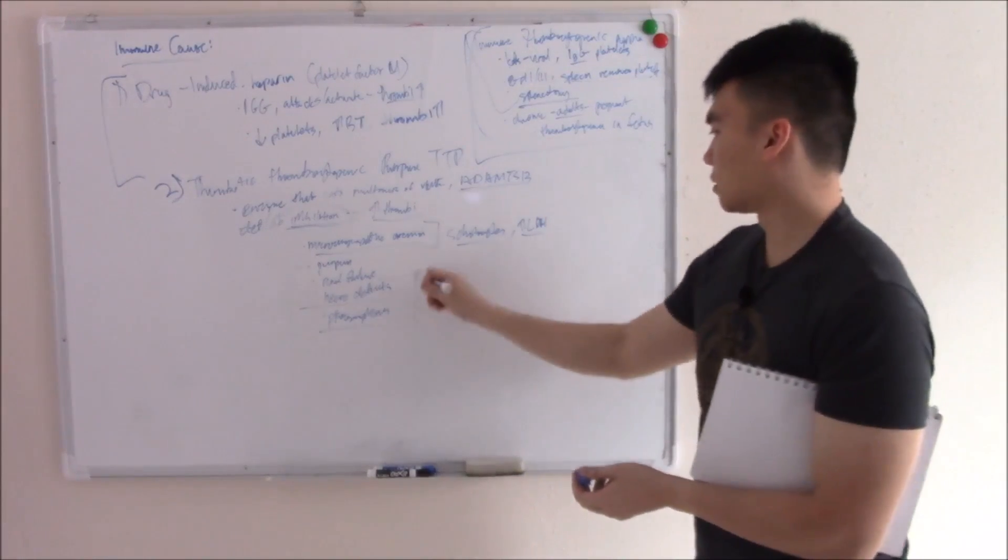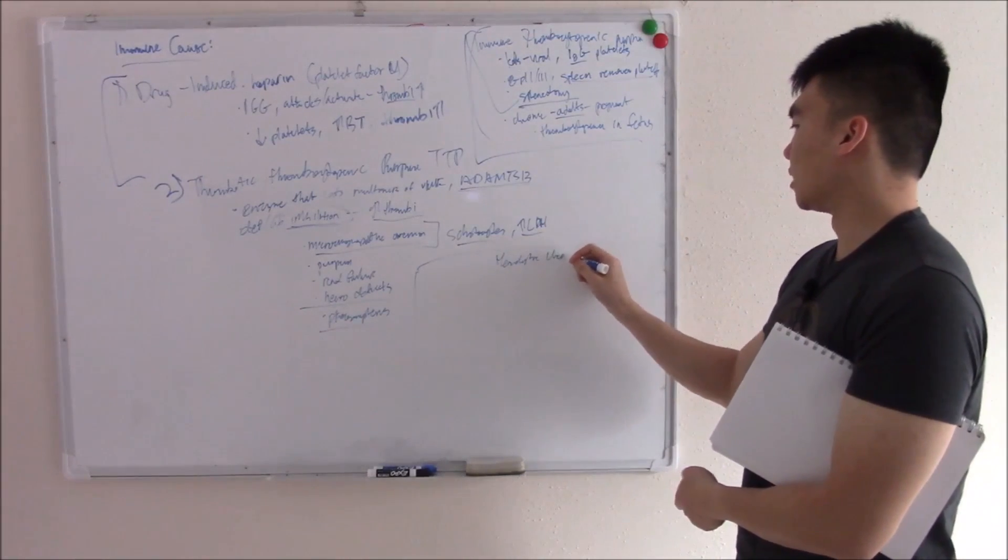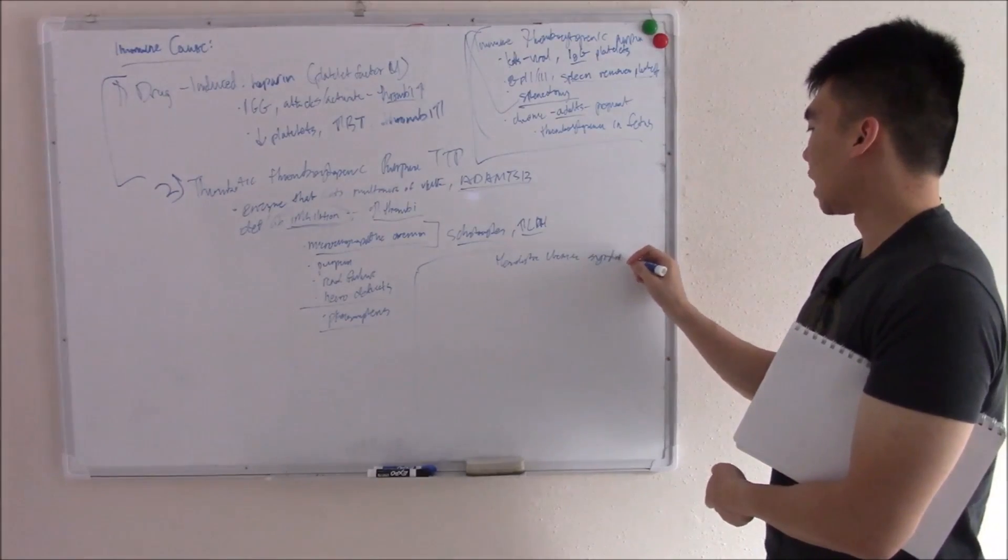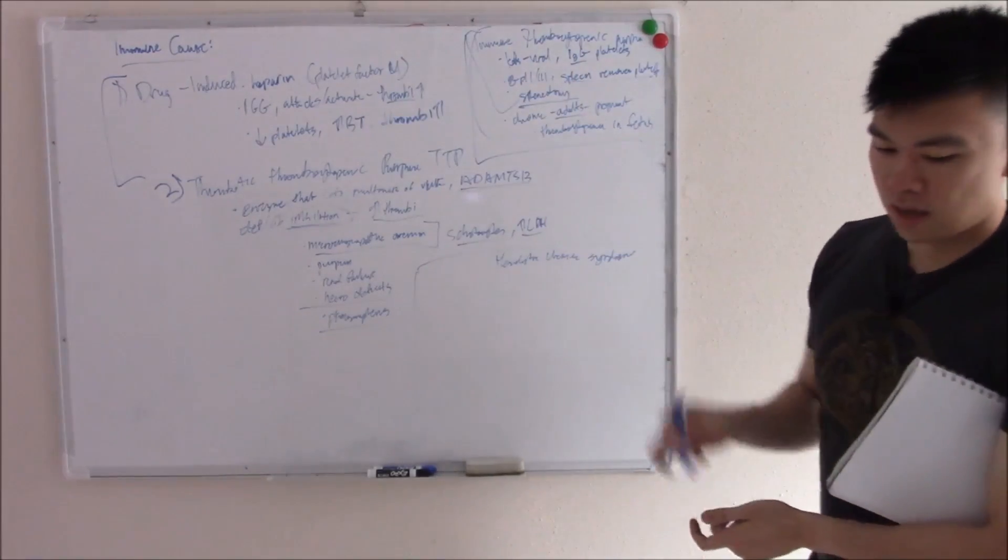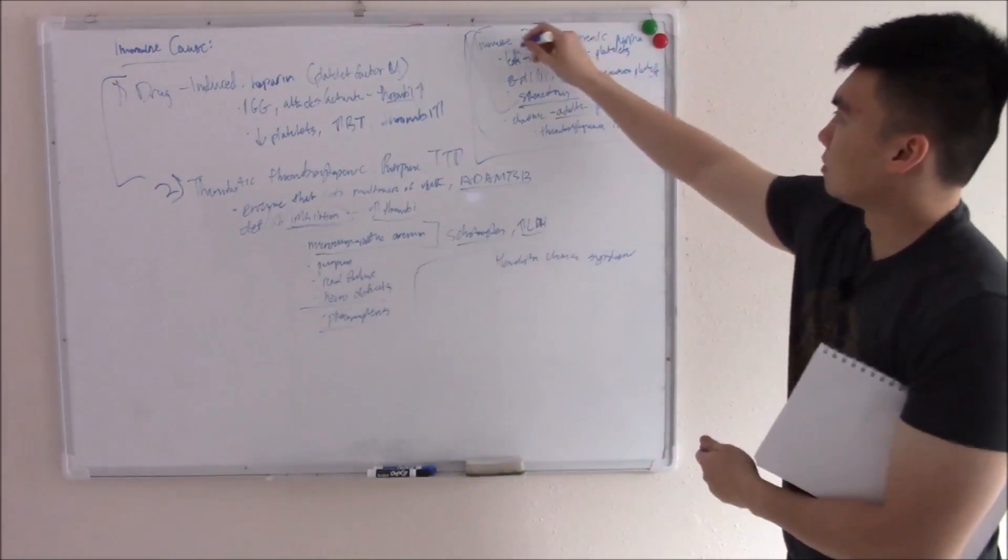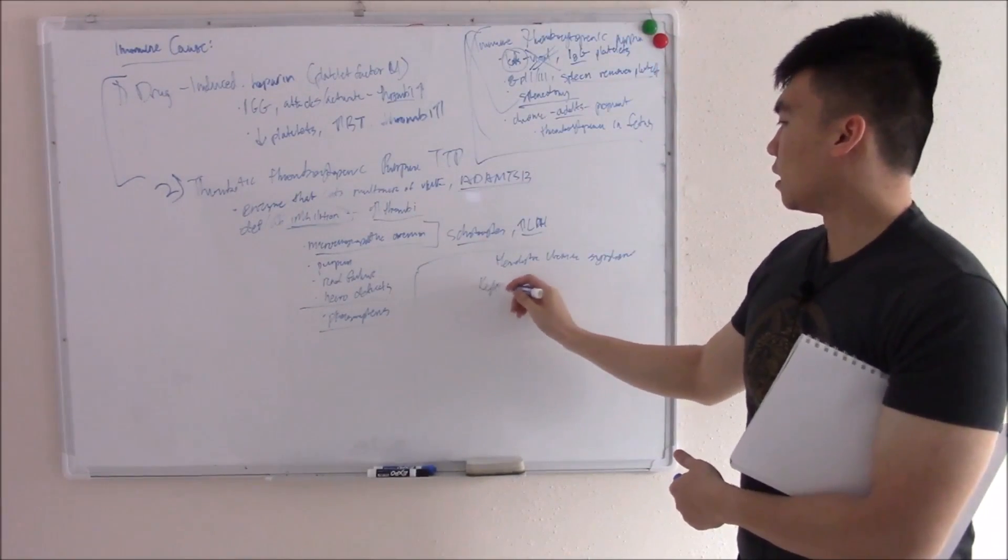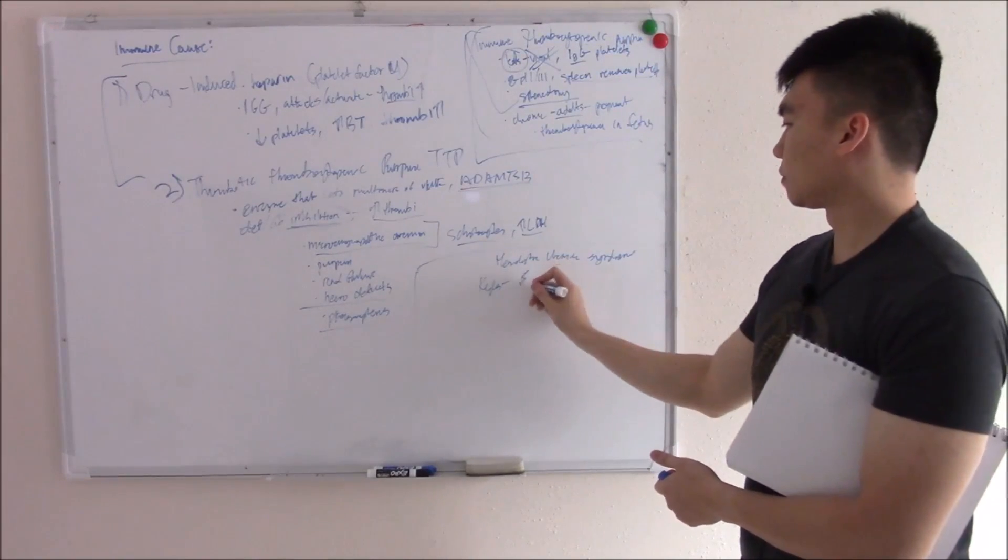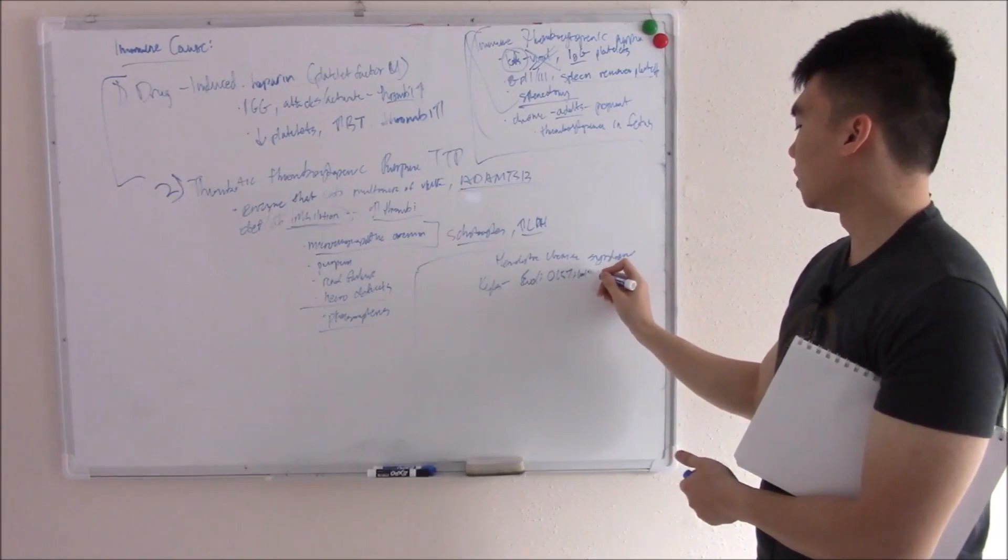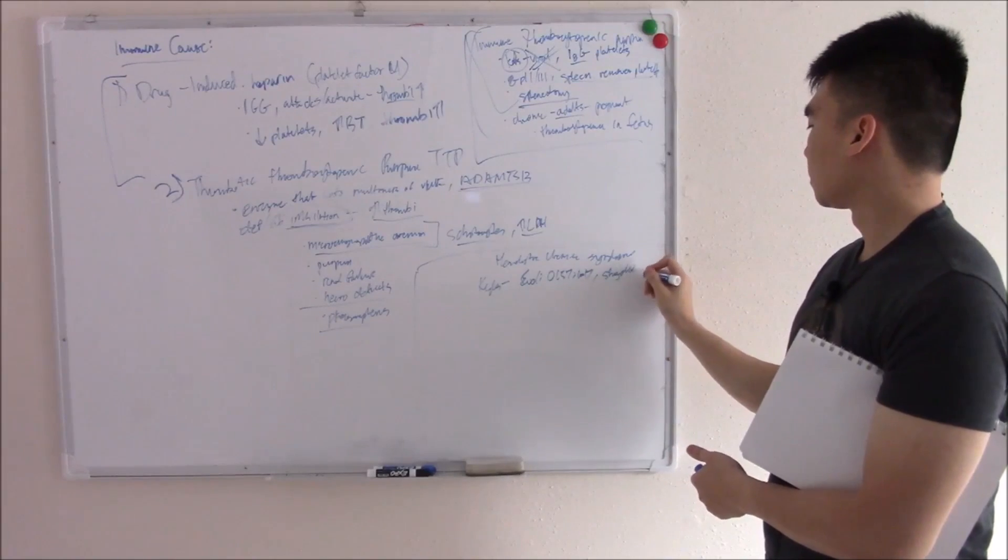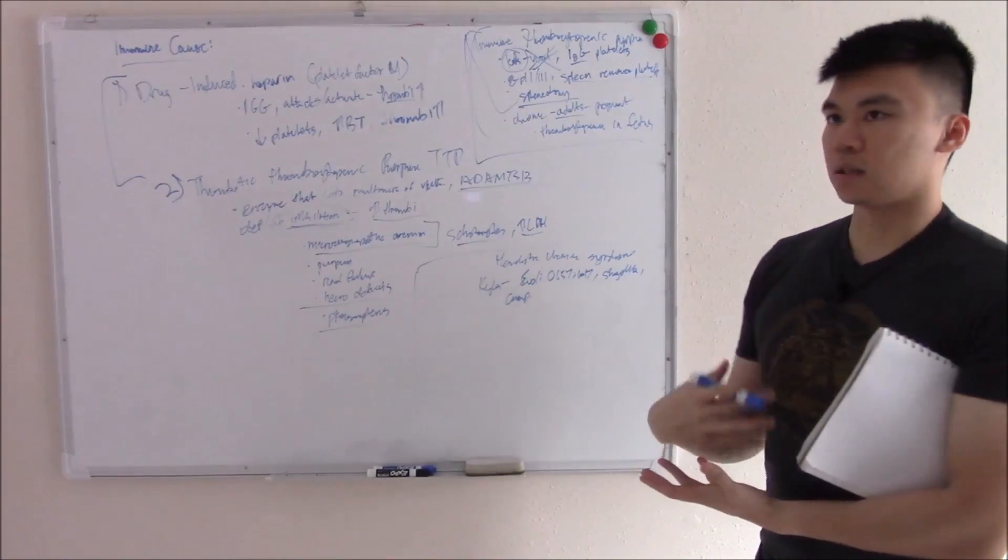The last, but not least, is going to be hemolytic uremic syndrome. I wanted to save this for last because it kind of draws on everything we've talked about so far. Hemolytic uremic syndrome is commonly seen in kids. But instead of following a viral illness, it follows an infection commonly E. coli O157H7. That's the serotype. Or Shigella. Or Campylobacter. These are all things that cause bloody diarrhea.